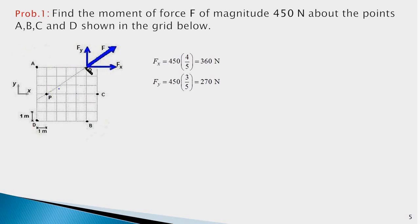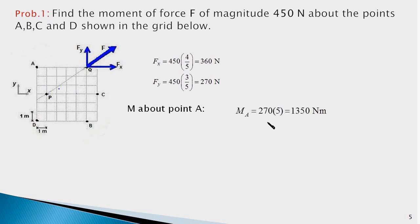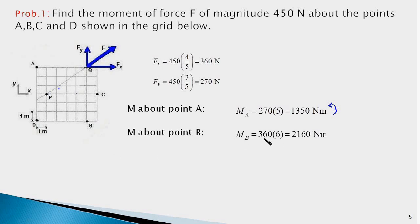With the force shifted to point Q, Fx the horizontal component passes through point A and causes zero moment about A. The vertical component Fy produces an anti-clockwise moment about A with a moment arm of 5 meters, so the moment about A equals 270 times 5, which is 1350 newton-meters anti-clockwise. We also notice that the vertical component Fy passes through point B and therefore causes no moment about B. The horizontal component Fx produces a clockwise moment about B with a moment arm of 6 meters, giving a moment of 360 times 6, which is 2160 newton-meters clockwise.